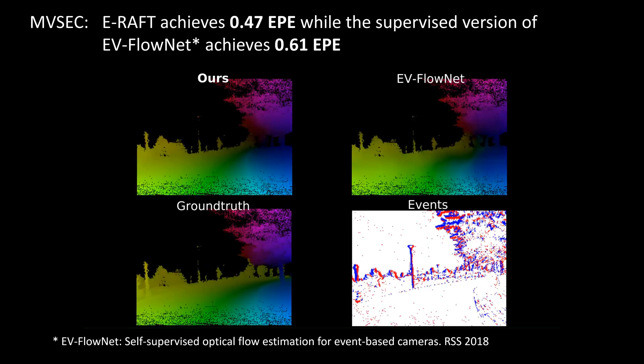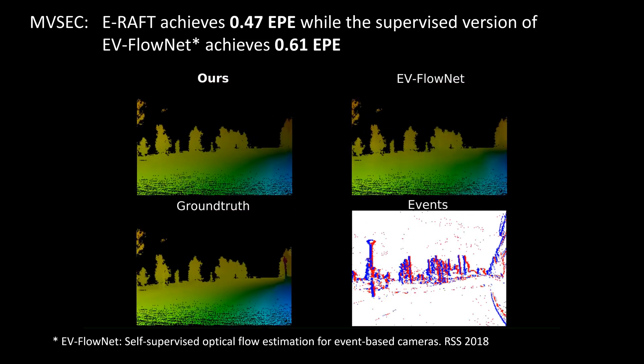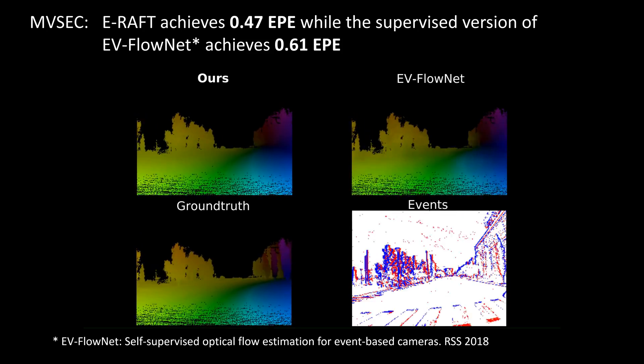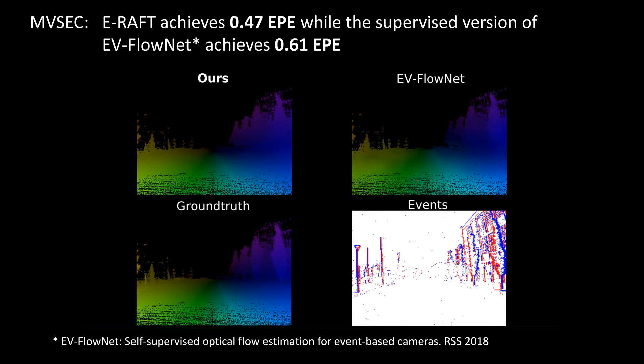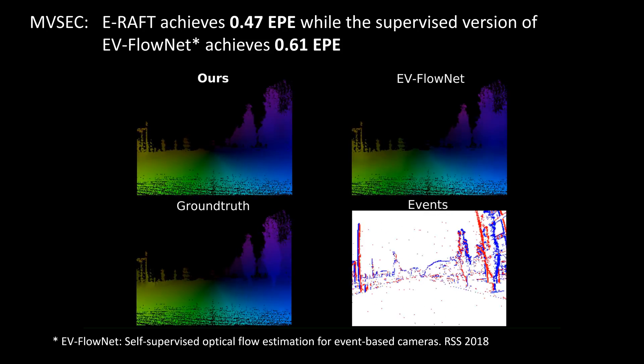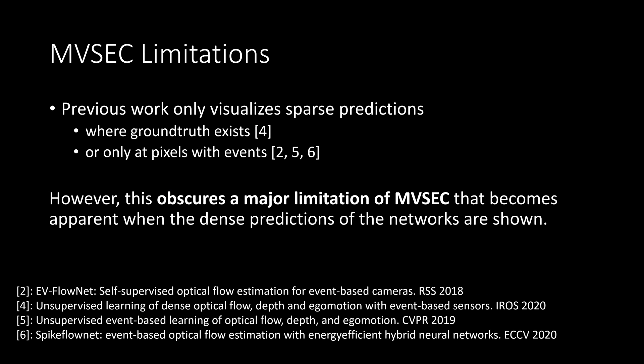ERAFT achieves 0.47 endpoint error on MVSEC, which is 23% lower than EVFlowNet under the same training setting. In this clip, we follow the visualization strategy of prior work that masks predictions where ground truth is available. Indeed, prior work often only visualizes predicted flow at pixels where events have been triggered.